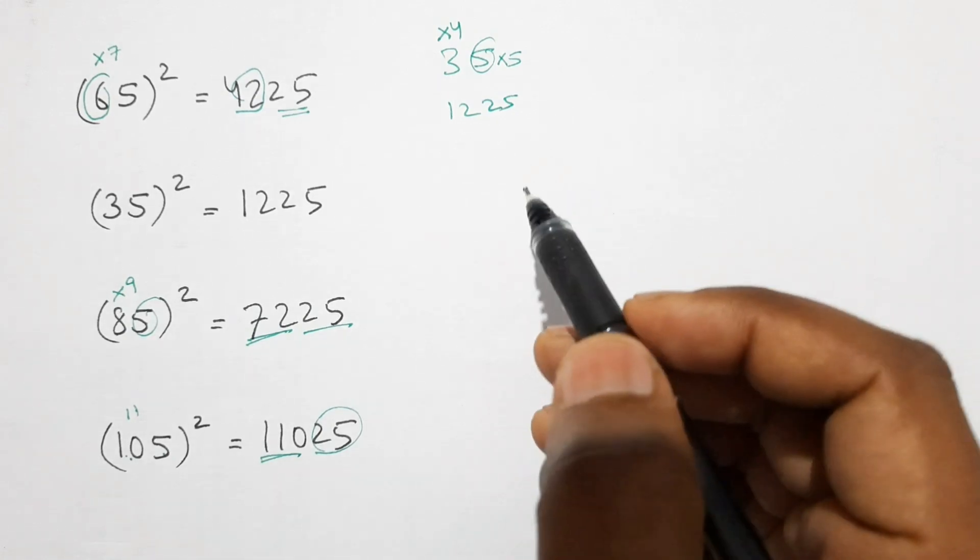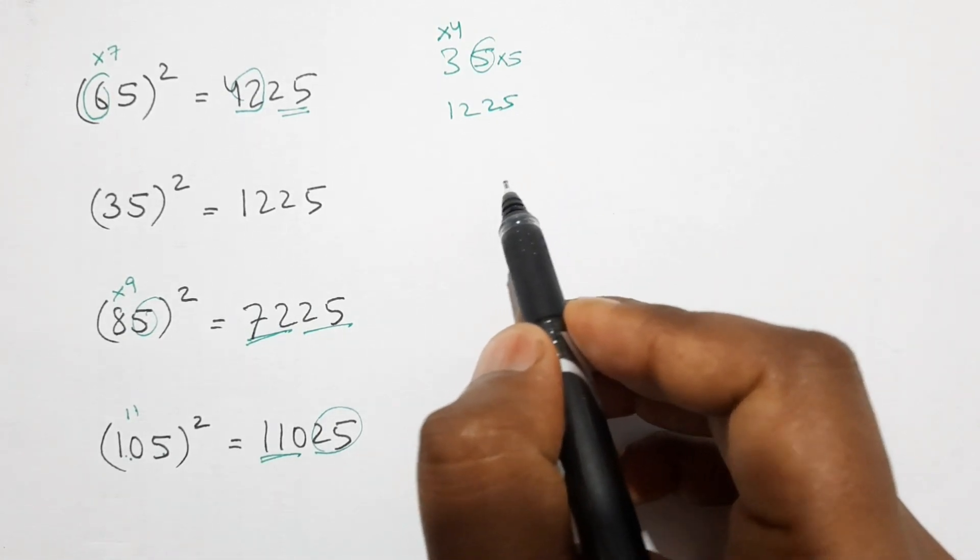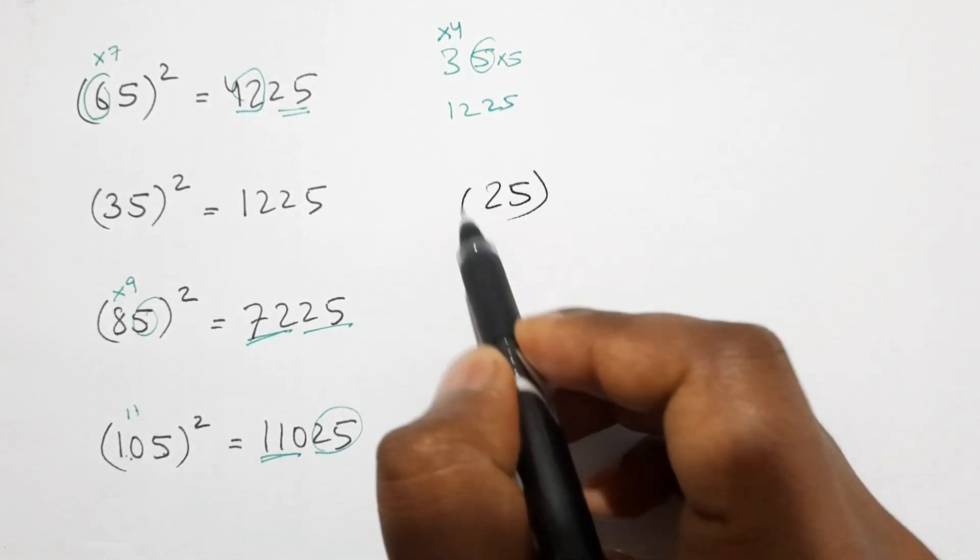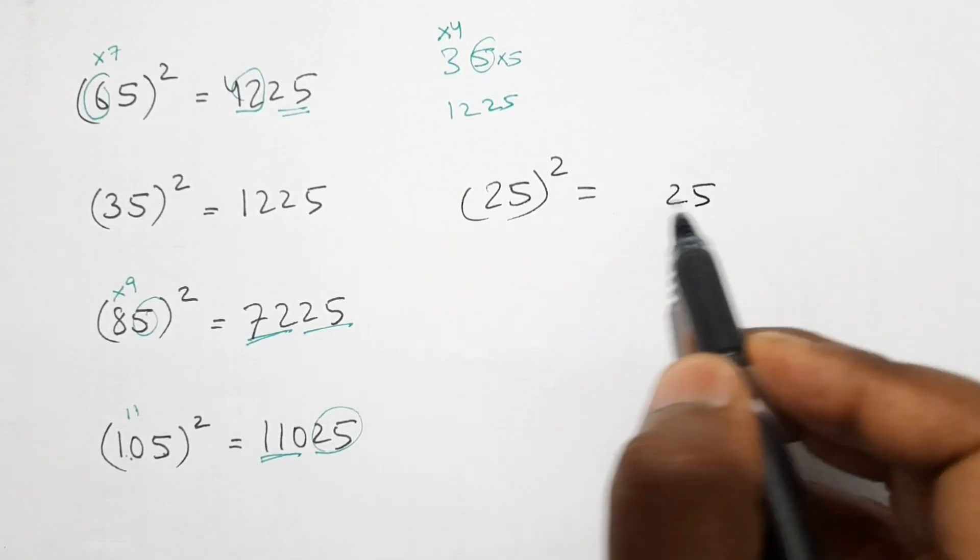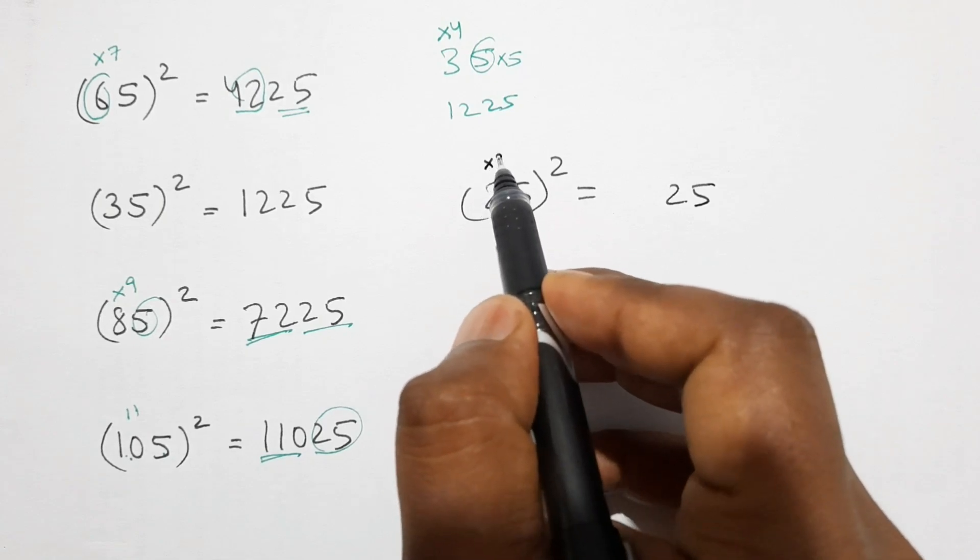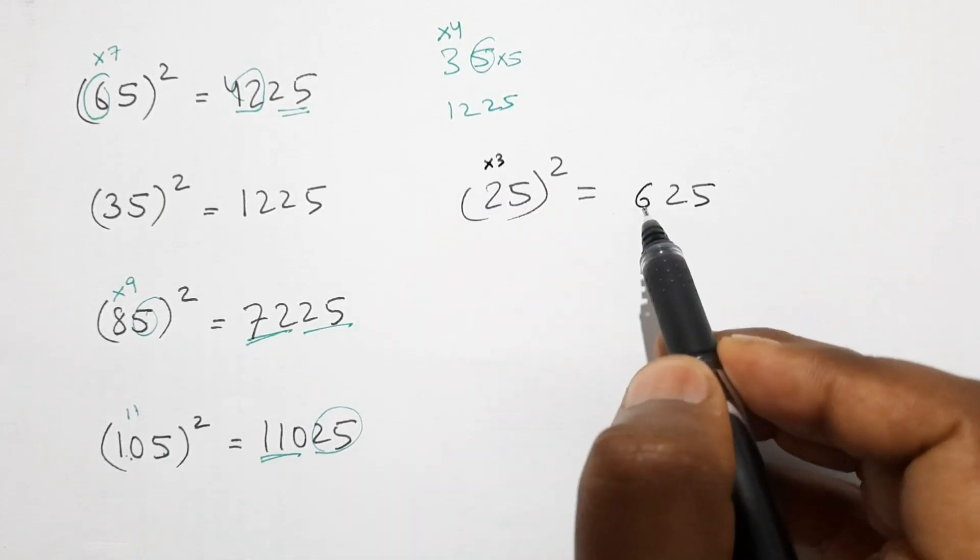So let's take a few examples. Let's take 25 square. So here also first 5 square is 25 and 2 is multiplied by 1 more than 2, that is 3, 2 times 3 is 6.